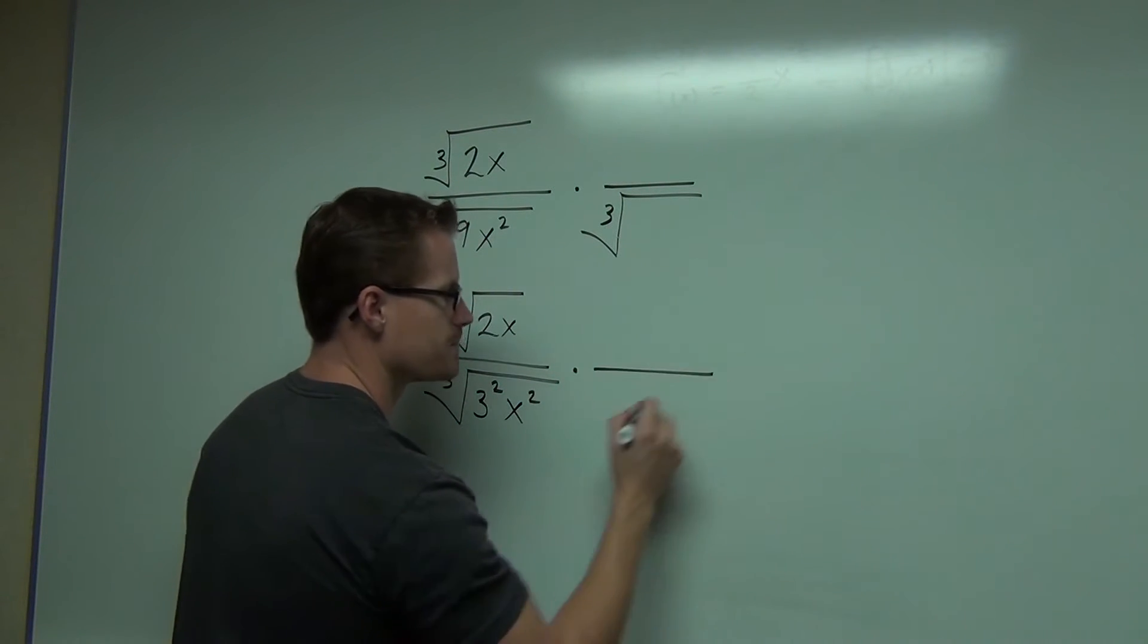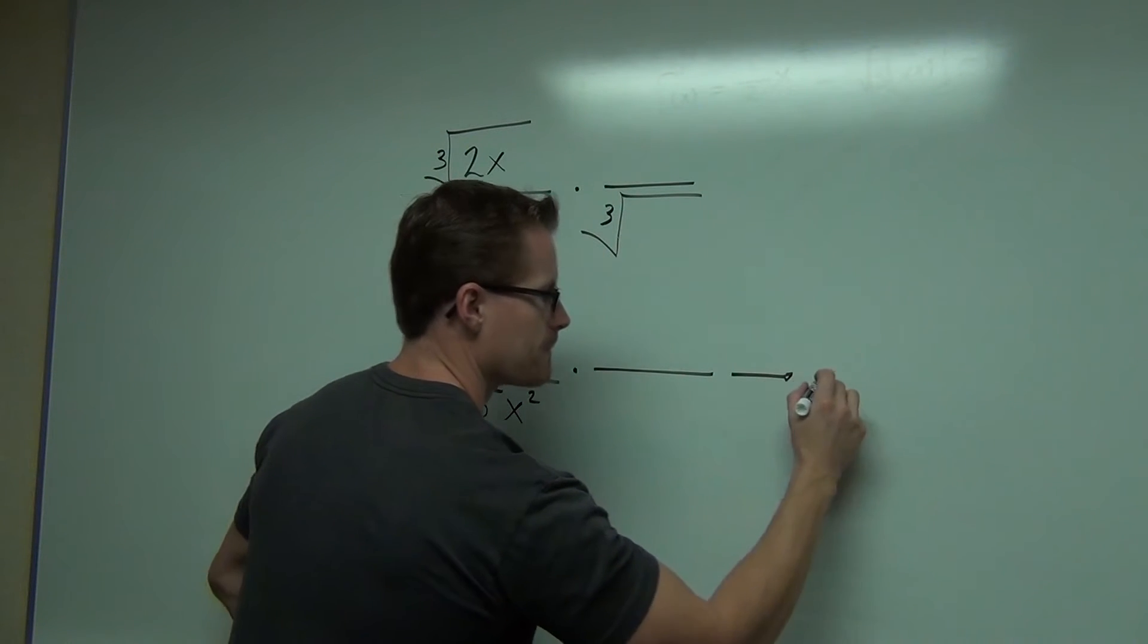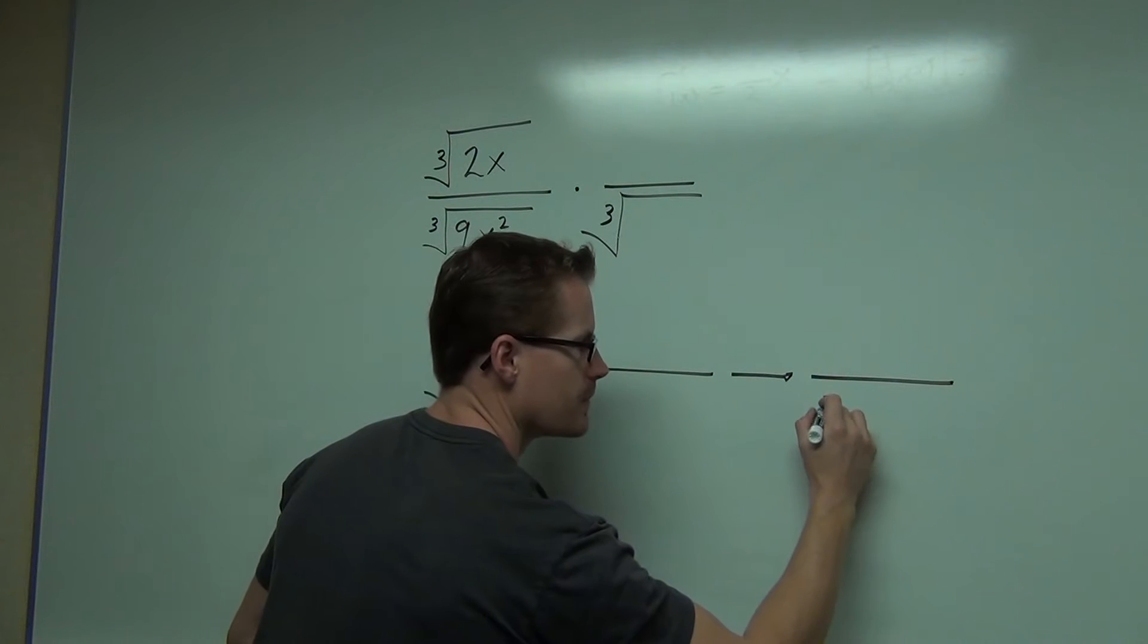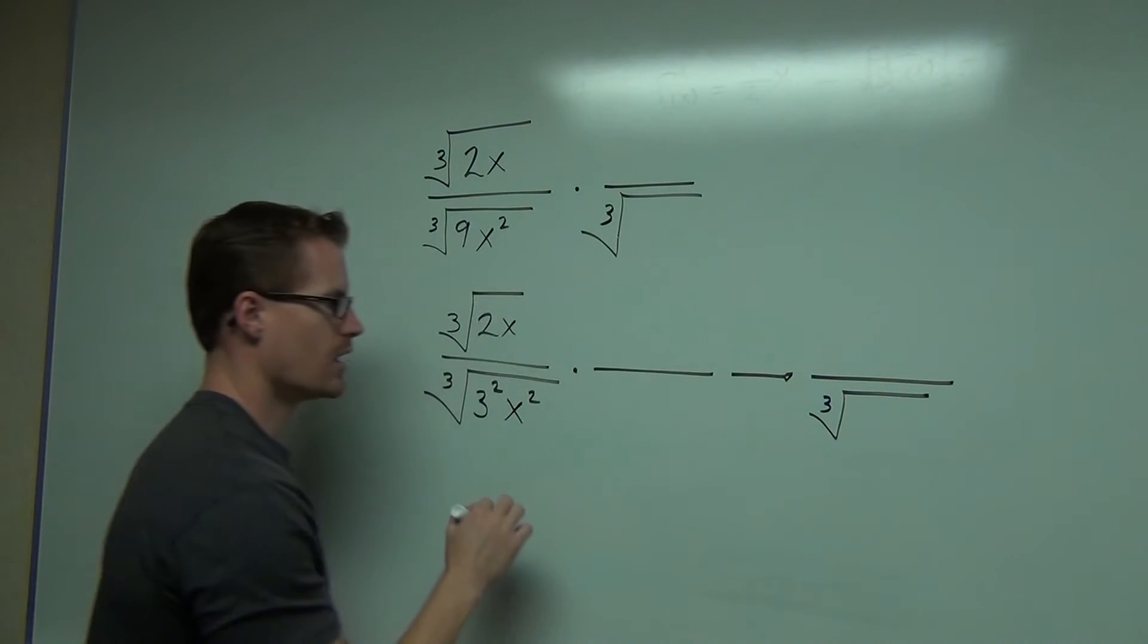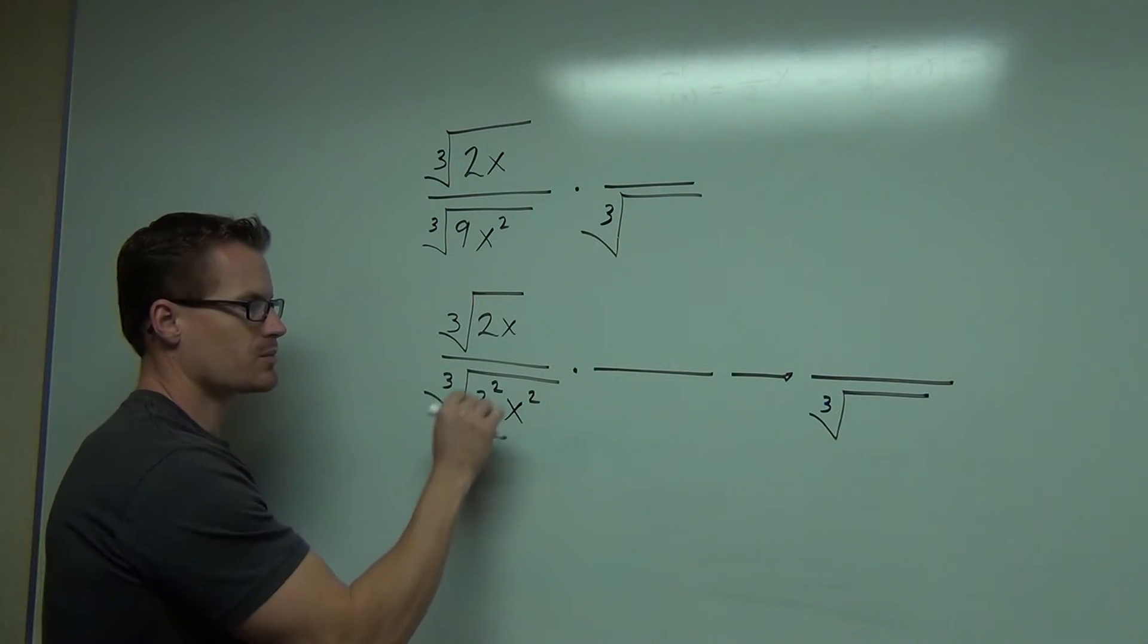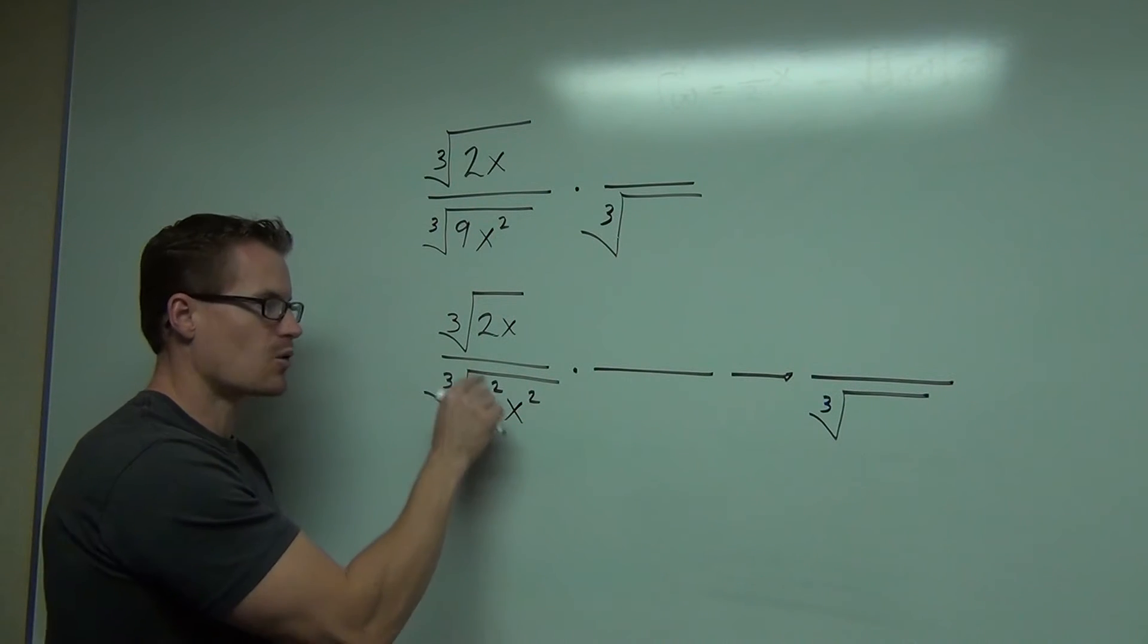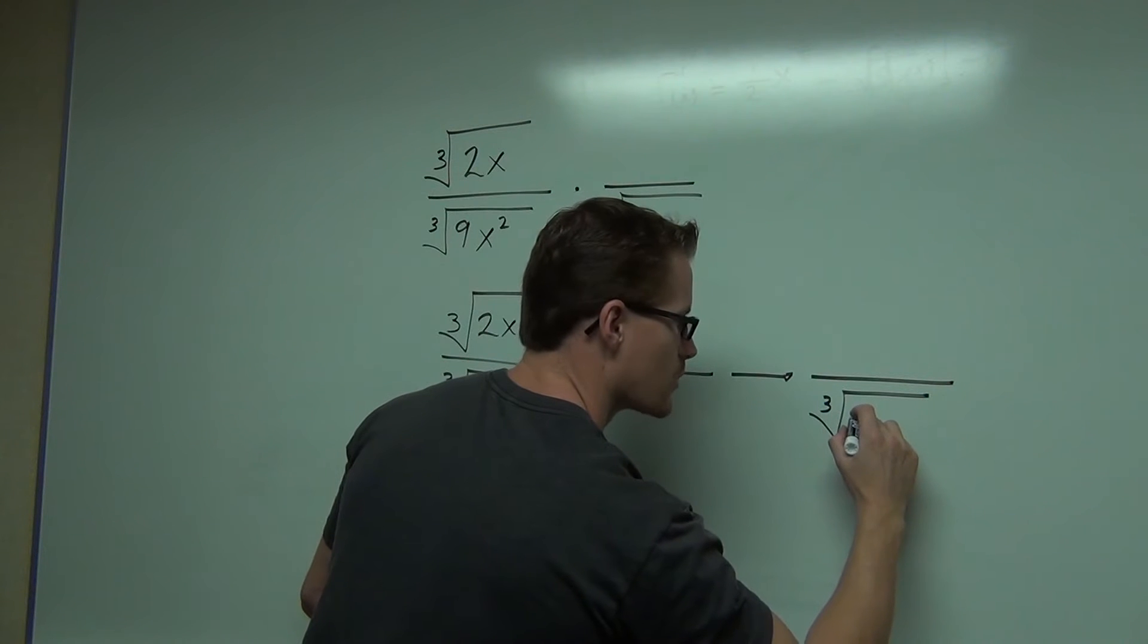Now when you rationalize it, what we're going to be trying to get is a cube root of—I want this to the third power, I want this to the third power. Because I know every time I have a power matching the root, I'm going to simplify that.